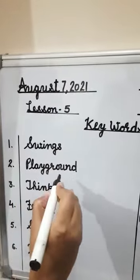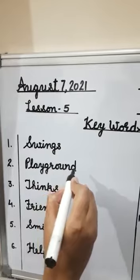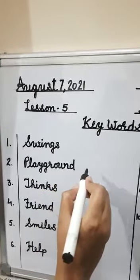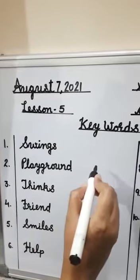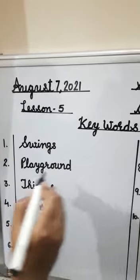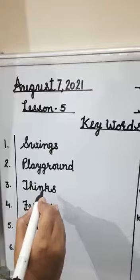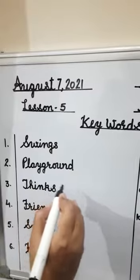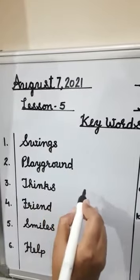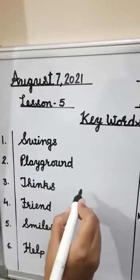Swings means jhule. Number 2. Playground. Playground means khel ka meidan.